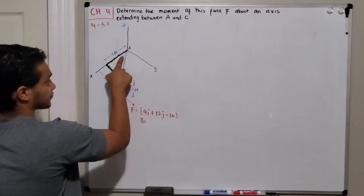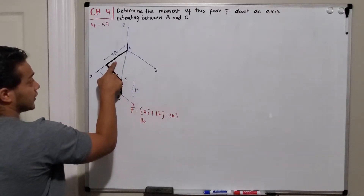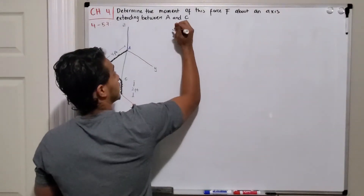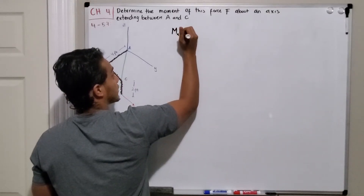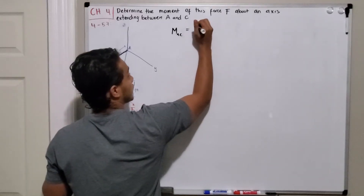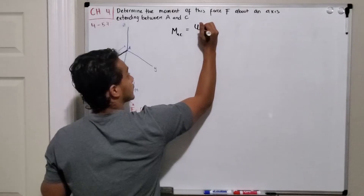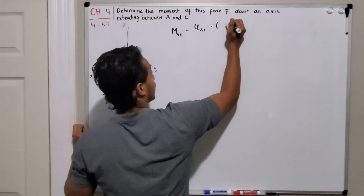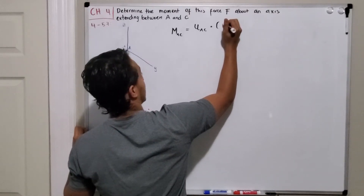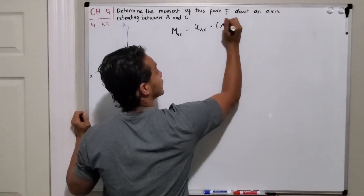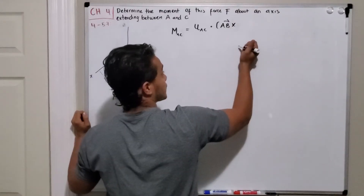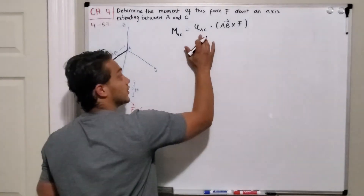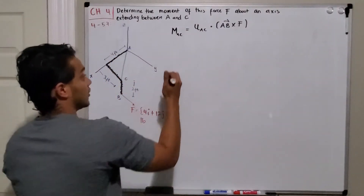Our system has four feet going in the x direction, three feet going in the y direction, and two feet going down. In order to find a moment about an axis, the moment about axis AC is going to be the unit vector of axis AC dotted with the cross product of vector AB and the force. The force is already given in component form, so we need to find unit vector AC and vector AB.